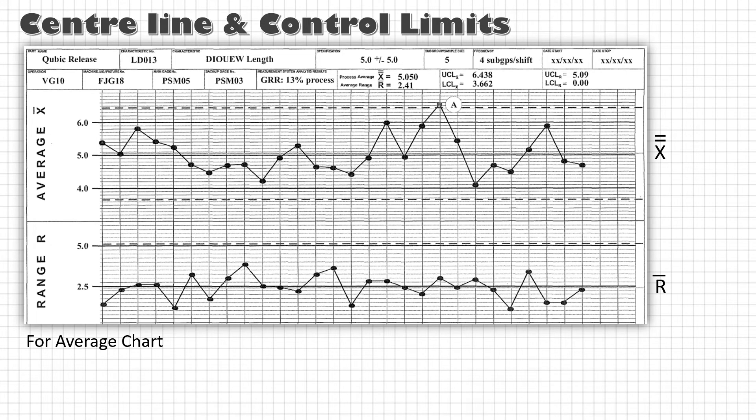For x bar chart upper control limit can be calculated as x double bar plus A2 R bar and lower control limit can be calculated as x double bar minus A2 R bar. Similarly, for range chart upper control limit can be calculated as d4 R bar and lower control limit as d3 R bar. Simple.